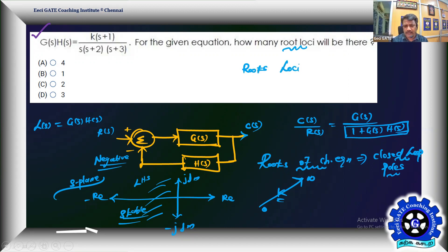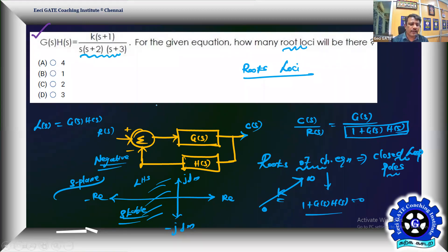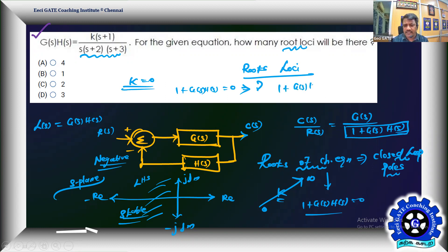The root locus technique gives the locus of individual roots. Setting 1 + G(s)H(s) = 0 gives the characteristic equation. The number of root loci equals the number of open-loop finite poles. Starting points of the root locus (K = 0) are the open-loop poles.